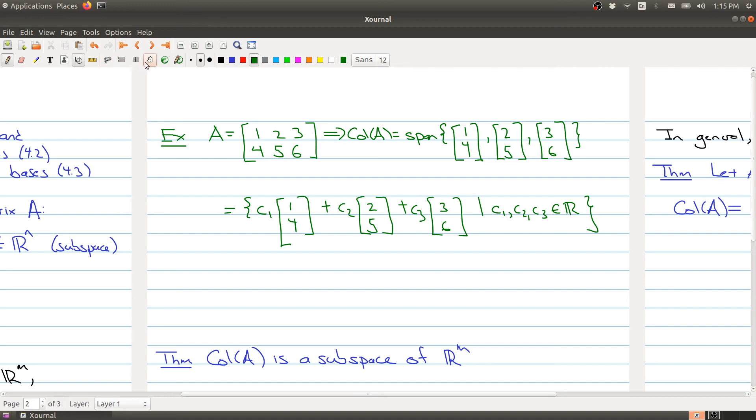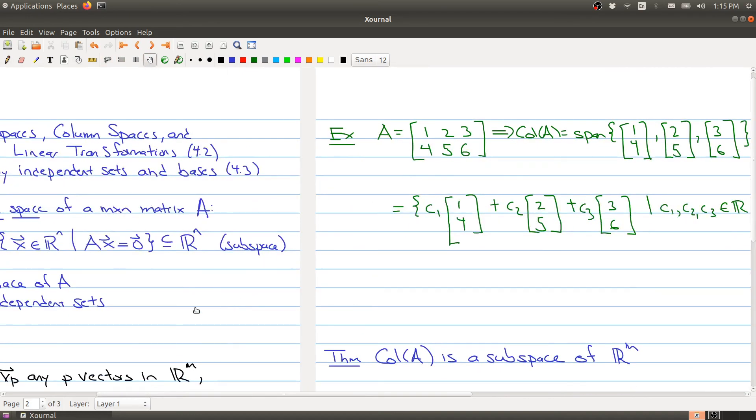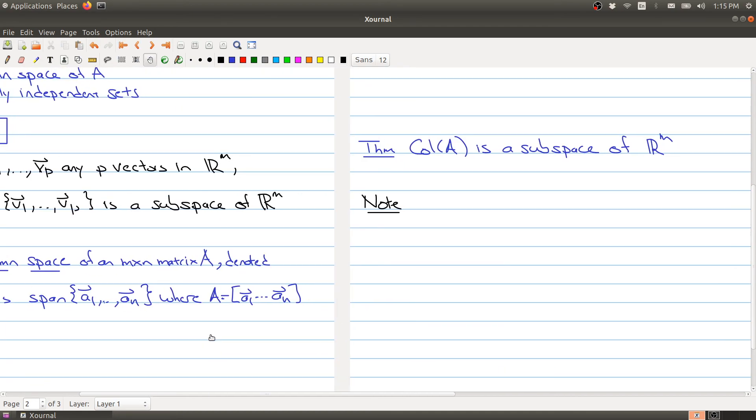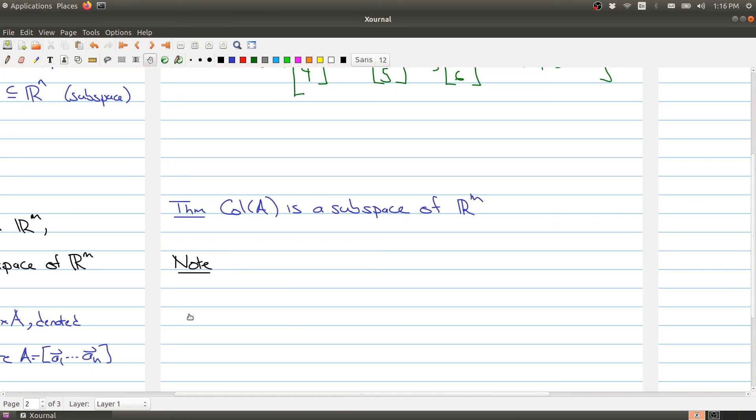Now, let's go back. And if we combine the result that we proved from last class with the definition of the column space, you actually see that the column space has to be a subspace of R M, because it's a span of a collection of vectors. So there's really nothing to prove here. It's just combining results that we've already seen, so that the column space is always a subspace of R M.